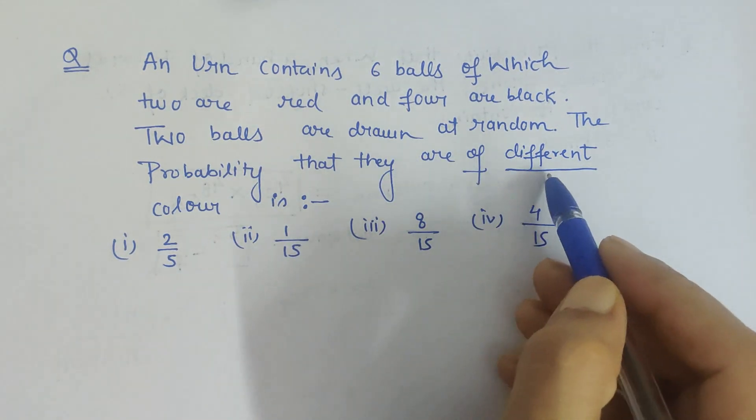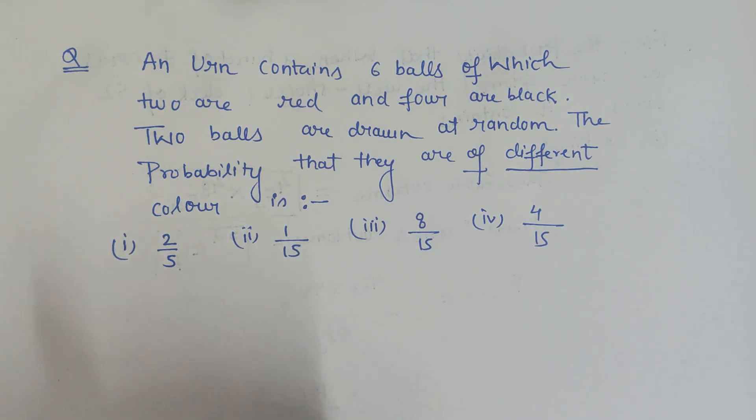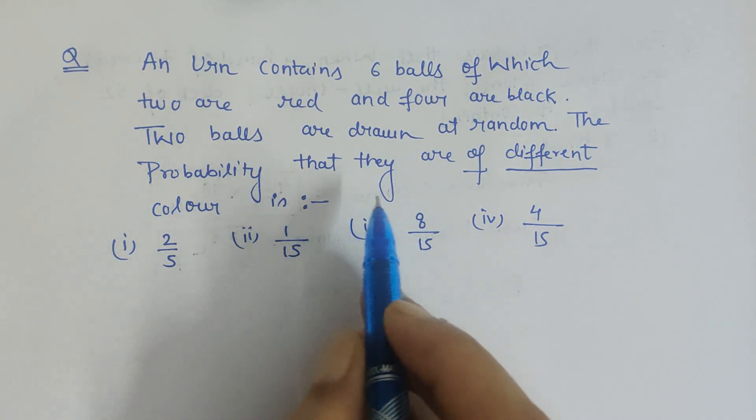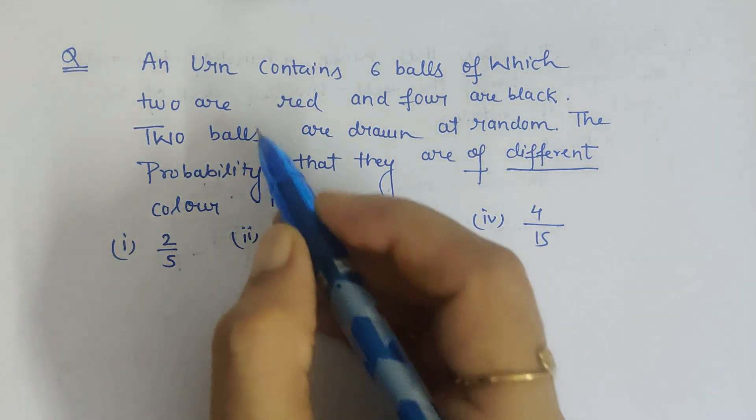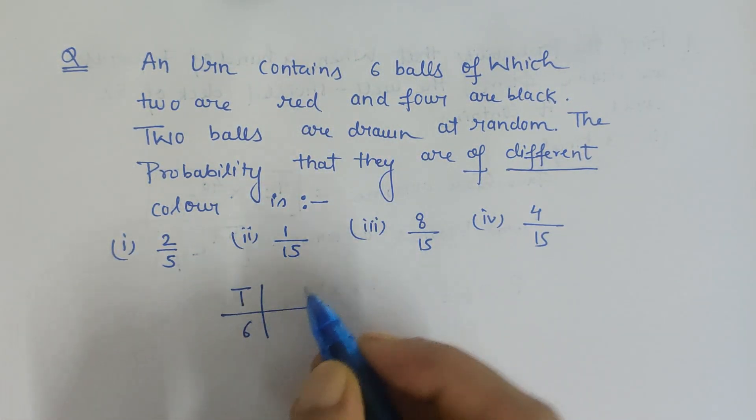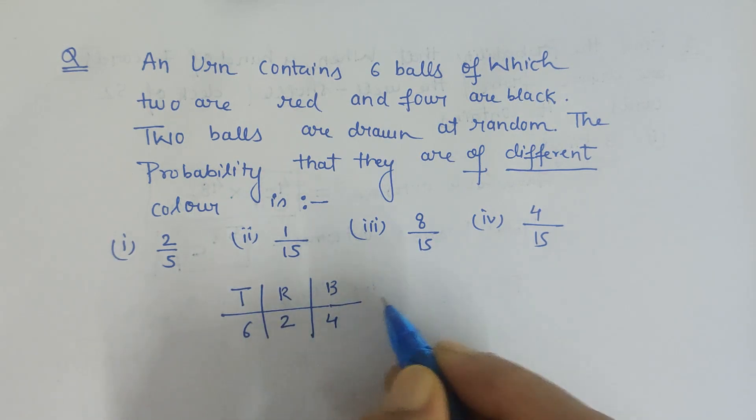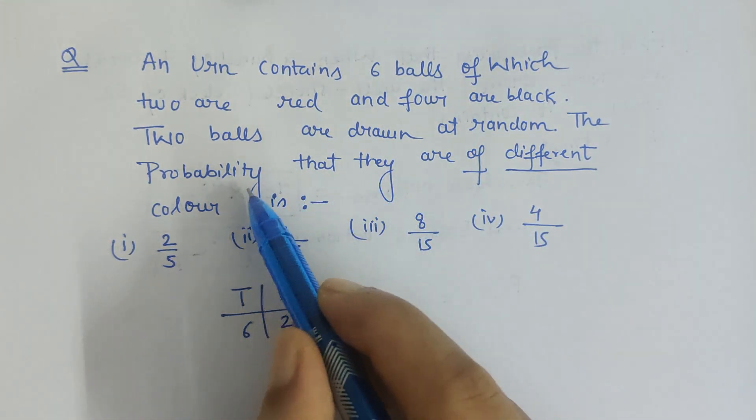It is always advisable to tabulate the information given in the question. So here, total balls we have is six. Two are red, so there are two red balls, and four are black. Next, what we are asked to find is that they are of different color.